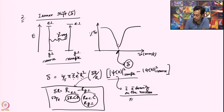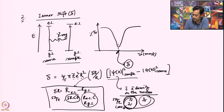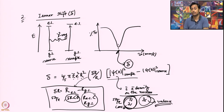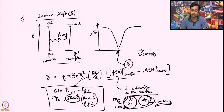For Iron-57, the 1s and 2s are core electrons with minimal effect. The valence electron density is more affected by the environment, creating differences between different oxidation states, spin states, and other conditions.